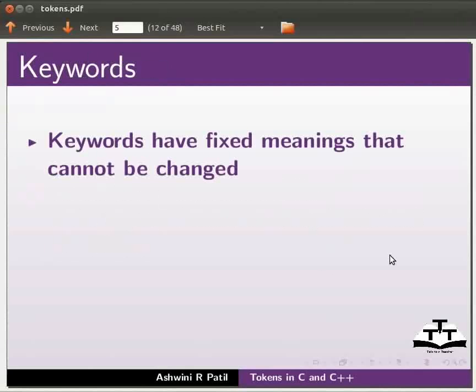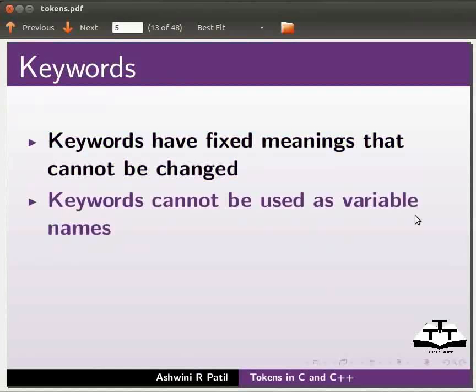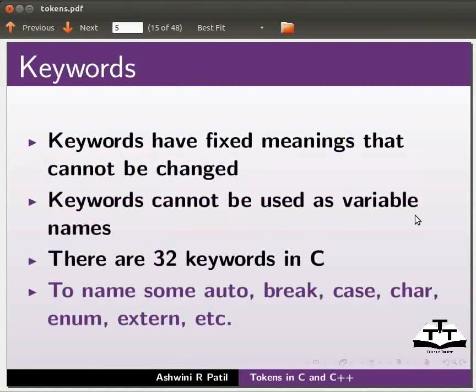Keywords have fixed meanings that cannot be changed. Keywords cannot be used as variable names. There are 32 keywords in C. To name some, auto, break, case, char, enum, extern, etc.